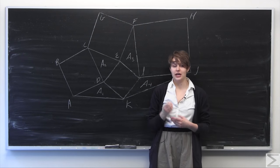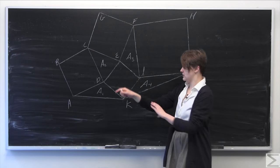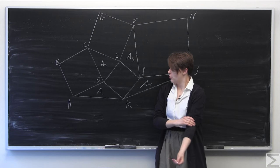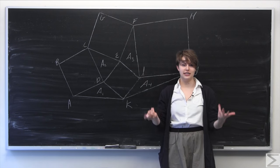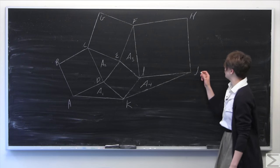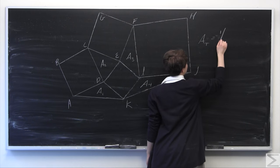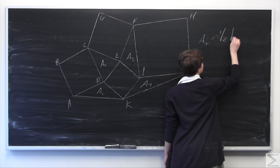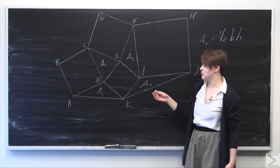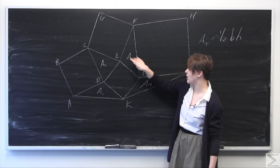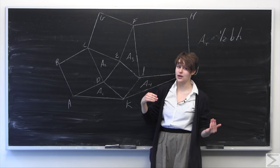It might not be immediately apparent from looking at this diagram what's going on and why the area of the four triangles is equal. We can start using the formula for the area of a triangle and try to see what we can get from there. We know the area of a triangle, A sub t, is equal to one half base times height. We need some way to compare all three of these areas — to find that the base is equal and the height is equal.